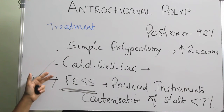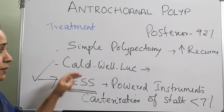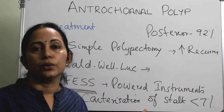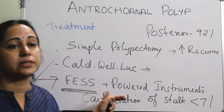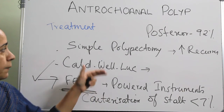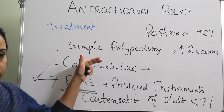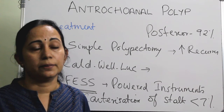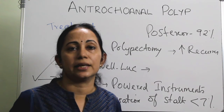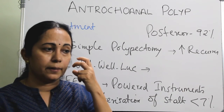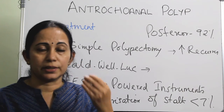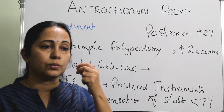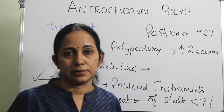These are the three treatment options, and the preferred one is FESS. Simple polypectomy is used only if FESS is not suitable, though it carries a high chance of recurrence. FESS can also be combined with a transcanine approach — canine fossa approach — if the polyp inside the maxillary sinus cannot be removed through a transnasal approach alone.